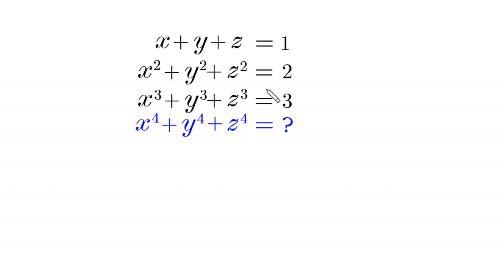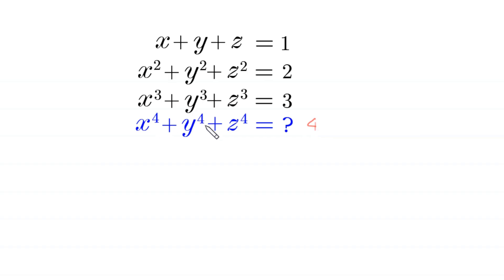If we look at the patterns, it looks like the value of x to the power 4 plus y to the power 4 plus z to the power 4 is equal to 4. But this is not sure. Let's solve and see that the value of x to the power 4 plus y to the power 4 plus z to the power 4 is equal to 4 or something else.